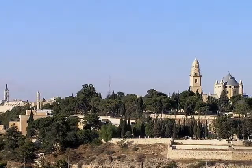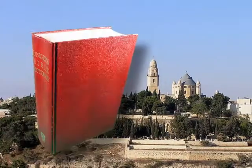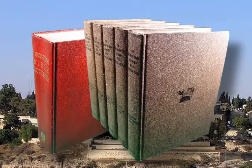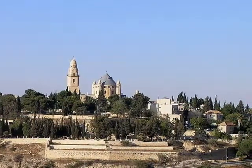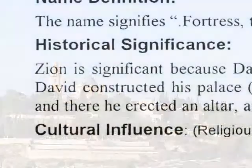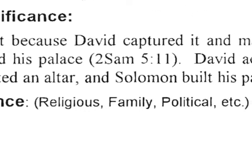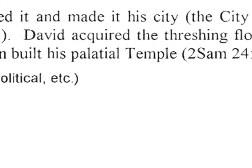The third step in your person or place study is to compile a basic historical survey on your study topic. Open your Bible dictionary or encyclopedia to your study topic and extract pertinent information. Seek to establish the reason why your study topic had scriptural significance. You might record a historical observation similar to this example: Zion is significant because David captured it and made Zion his city, the City of David (2 Samuel 5:7). In Zion, David constructed his palace (2 Samuel 5:11). David acquired the threshing floor of Ornan further up the ridge and there erected an altar. Solomon built his palatial temple on the site of Ornan's threshing floor (2 Samuel 24:18 and following).